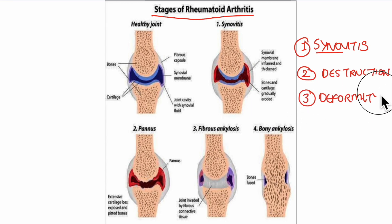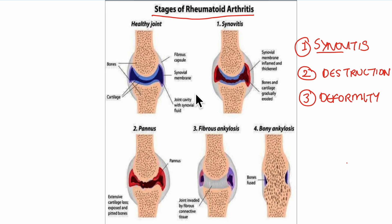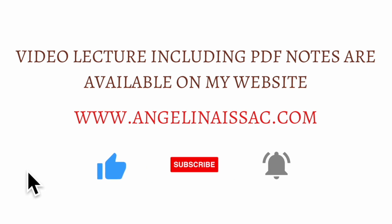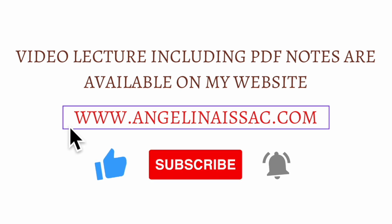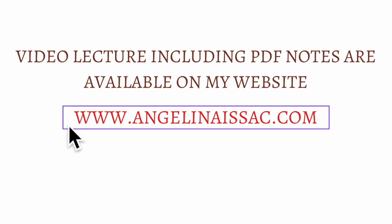Before looking at these three stages in detail, let us look at the structure of a healthy joint. To access the remaining video on rheumatoid arthritis and its physiotherapy management, you can visit my website. The full video lecture covers the detailed explanation of the stages, clinical features, orthopedic deformities, diagnostic criteria, investigations, medical management, surgical management, physiotherapy assessment, aims and treatment, with notes also provided. You can access it at www.angelinaisaac.com at a minimal price — the link is in the description below.